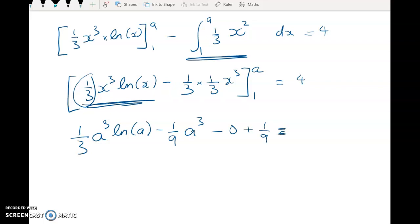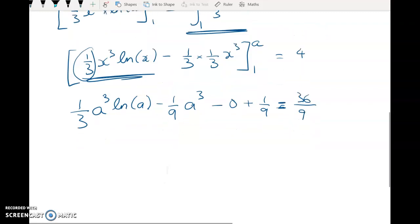Now I can see that I've got all these ninths, so I'm going to write 4 as 36 over 9 now. I should be feeling happy, because I can see now where the 35 and the 9 are coming from. So cleaning that up a little bit gives me 1 third of A cubed, natural log of A, minus 1 ninth of A cubed, is equal to 35 over 9.